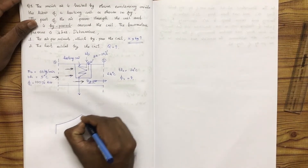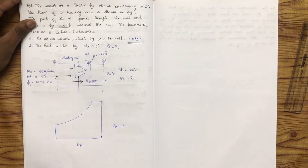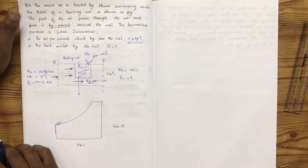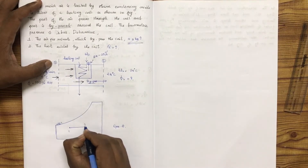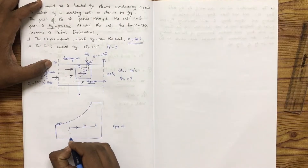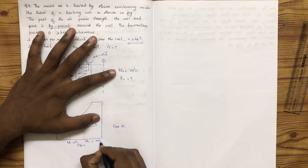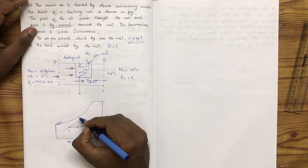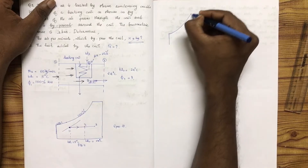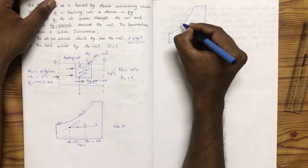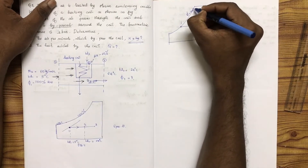Using the psychrometric chart with dry bulb temperature on one axis and specific humidity on the other, and wet bulb temperature lines shown, state 1 is at 5 degrees Celsius dry bulb temperature. State 2 is located at 100% relative humidity, which corresponds to the saturation line.